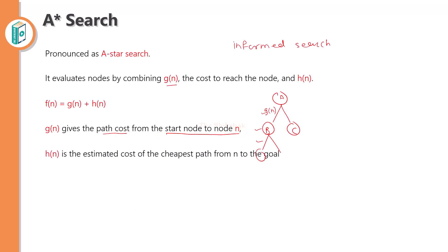What is H(N)? H(N) is nothing but the heuristic value for a particular node. For example, if H(N) for node C is 10, this is the estimated cost that you can reach up to your goal. That is the estimated cost to reach the goal.